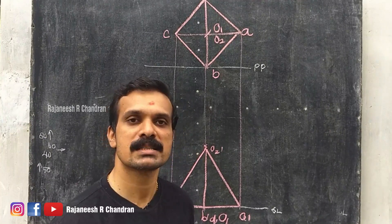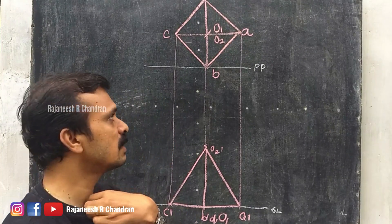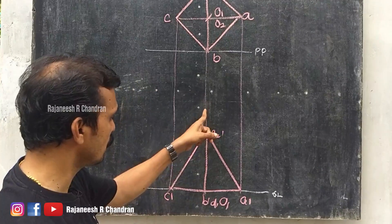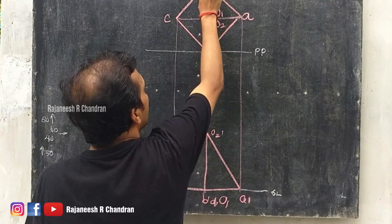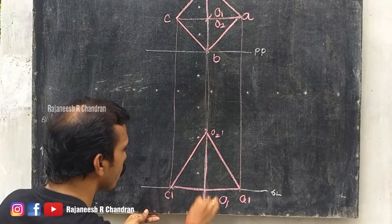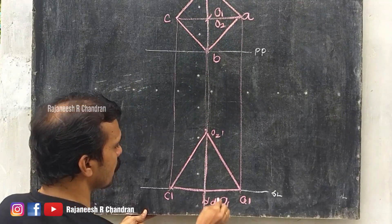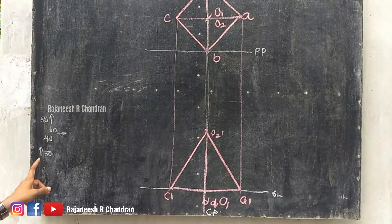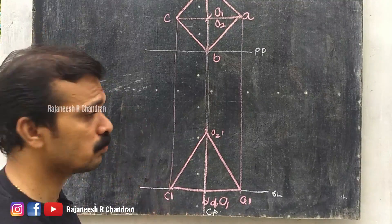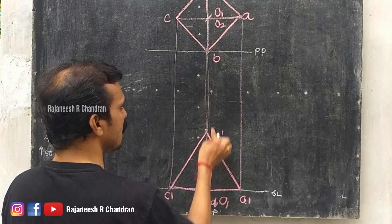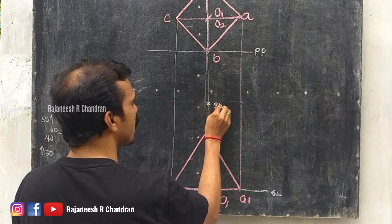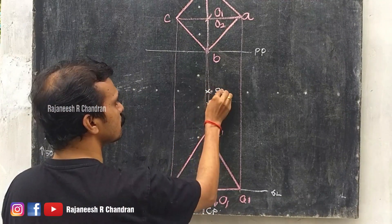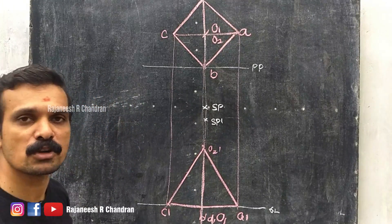Now we have to locate the central plane. It is given that the central plane is passing through the axis of the pyramid. So this will be the central plane. Now for the station point: the station point is 80 above, so this will be SP dash, and 60 in front, so this will be SP. The station point is also obtained.